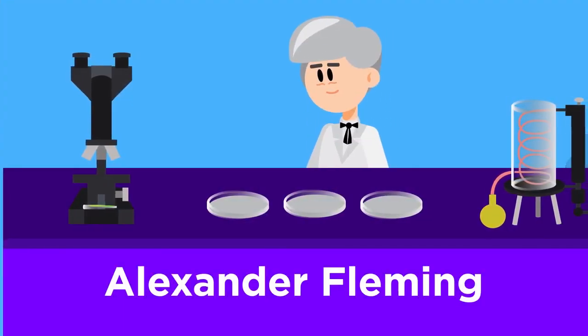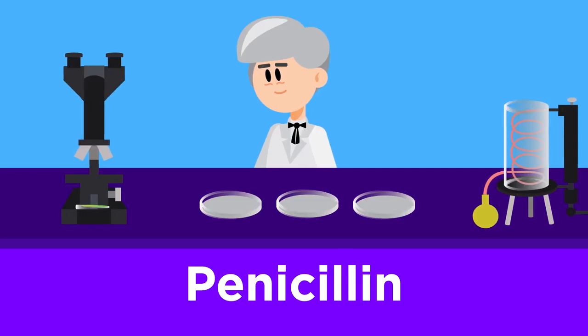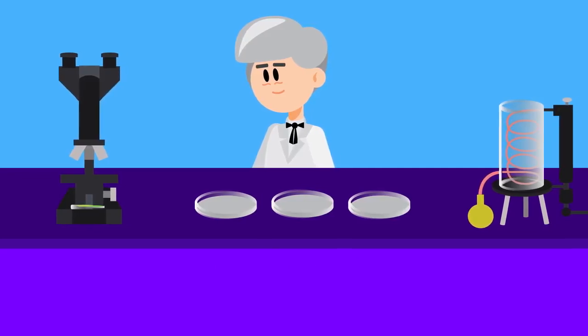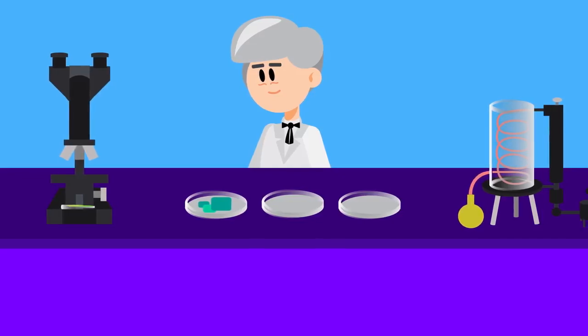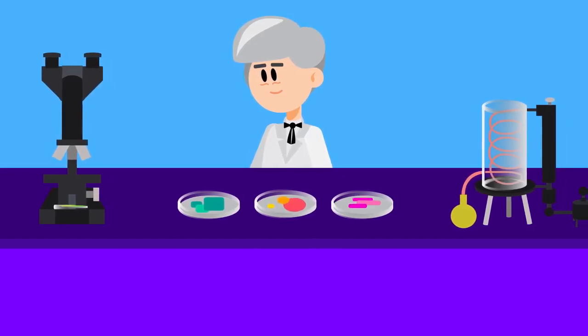In 1928, Alexander Fleming discovered the very first antibiotic, penicillin. One day after studying influenza, he noticed that mold had accidentally developed on a set of petri dishes being used to grow the bacteria called staphylococcus.